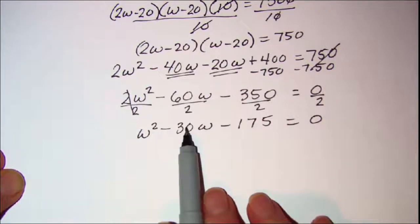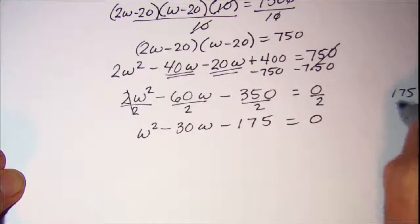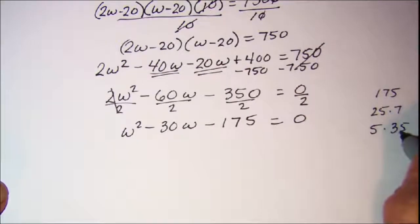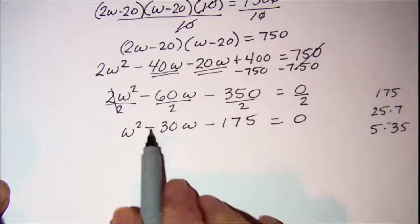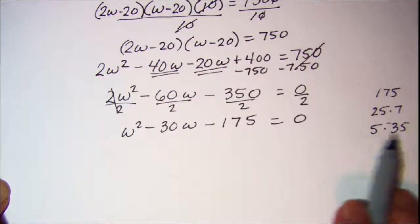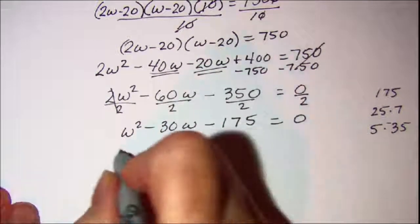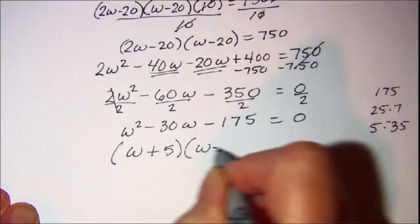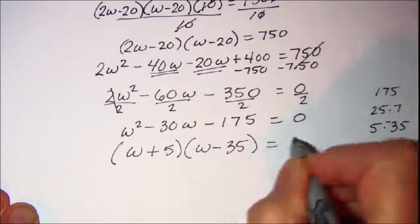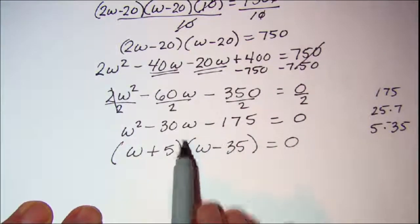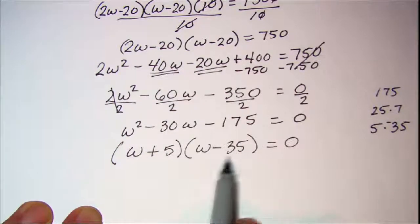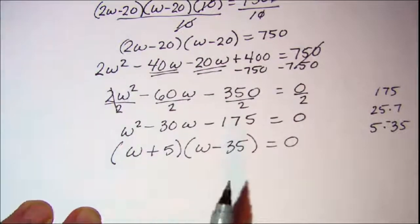I need factors of 175 with a difference of 30. 175 breaks into 25 times 7, but that's not a difference of 30. I could do 5 and 35 — those two numbers do have a difference of 30. Since the middle term is negative, I'll use 5 and negative 35, giving (W + 5)(W − 35) = 0. Quick check: inner product is positive 5W, outer product is negative 35W, and together that gives negative 30W. ✓